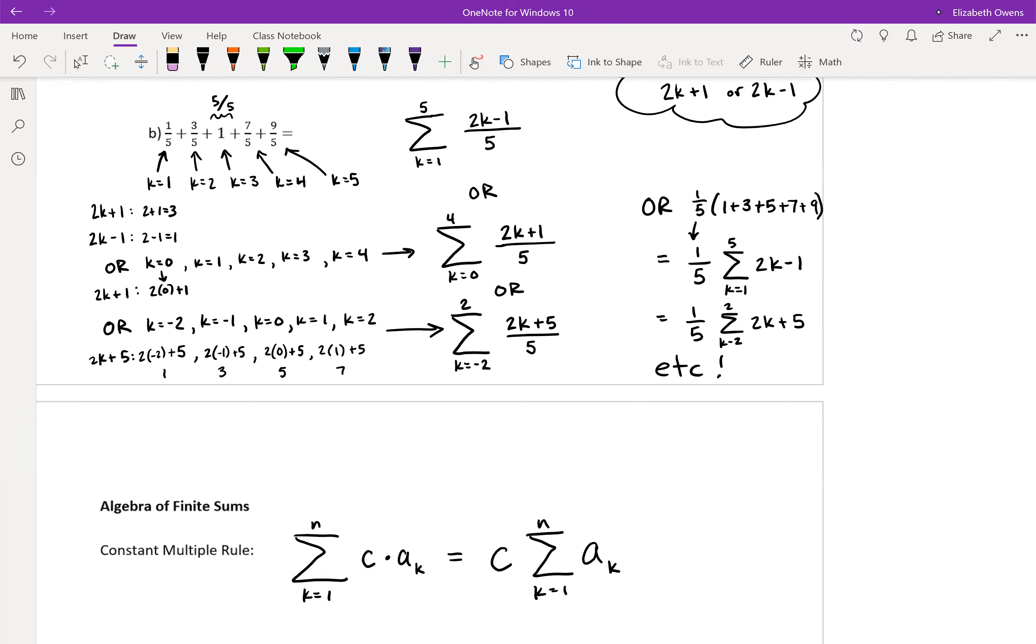And so in each new formula we were coming up with, the numerator changed every time because that was the odd numbers increasing based on our index. And then the five just sat in the denominator because it was just a constant one-fifth multiplying our formula.